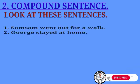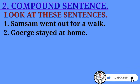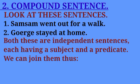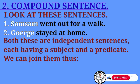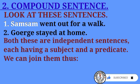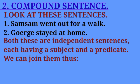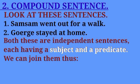Look at this example: 'Samsem went out for a walk. George stayed at home.' Both of these are independent simple sentences — each one has its own subject and predicate and is not dependent on the other. They can stand alone.